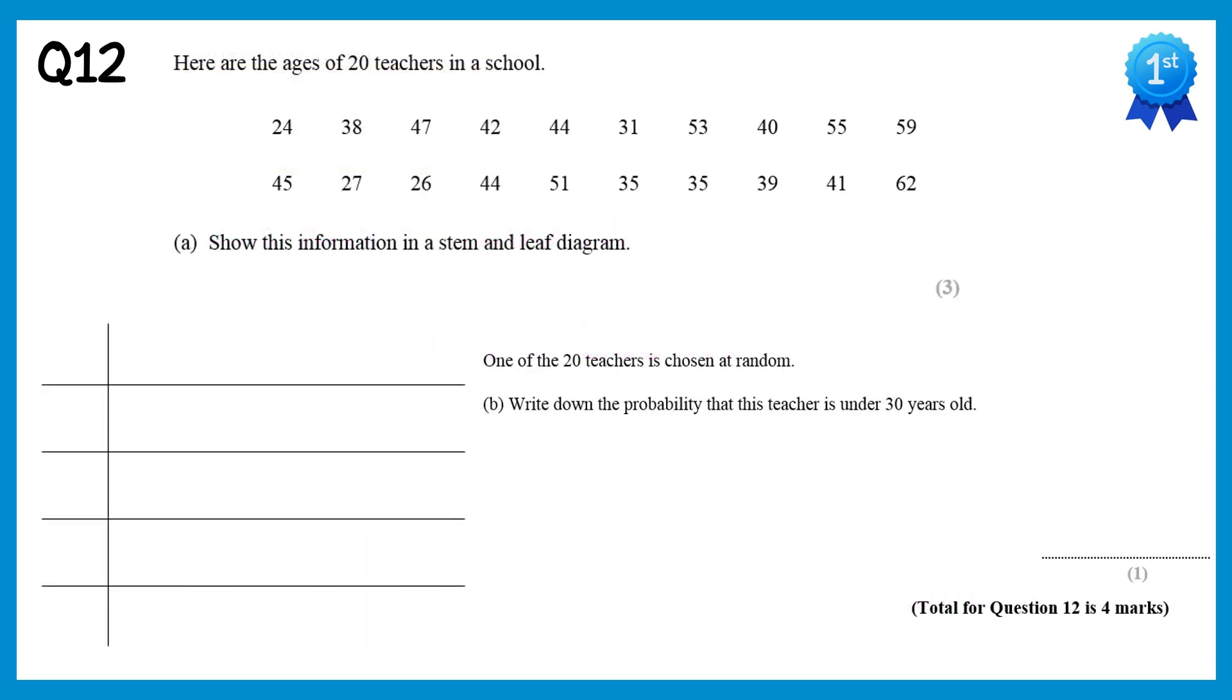The numbers in this question go from the 20s up to the 60s, so I'm going to do a stem, which is 2, 3, 4, 5 and 6. I'd then add a key, I've gone for 2 line 4, which represents 24. You don't have to use this number as long as you've got a key that makes sense. We can then begin adding the numbers and crossing them off as we go.